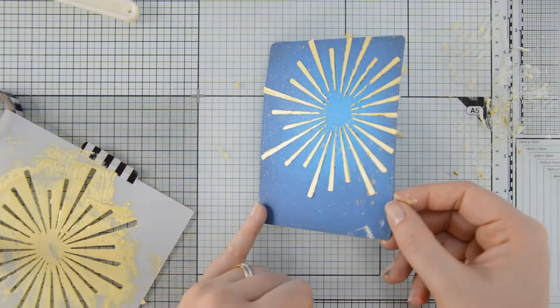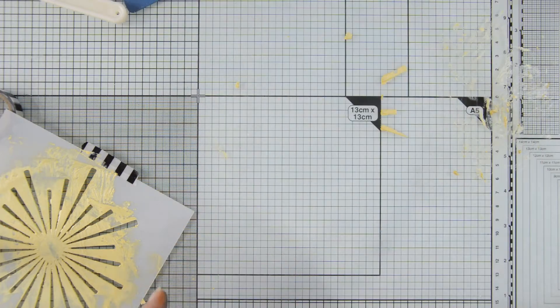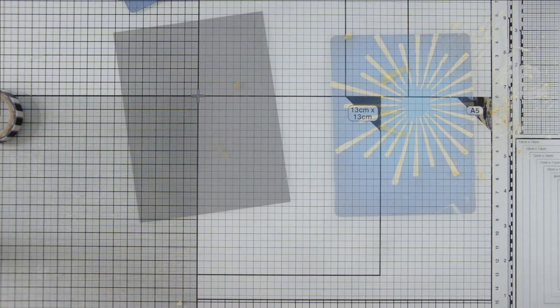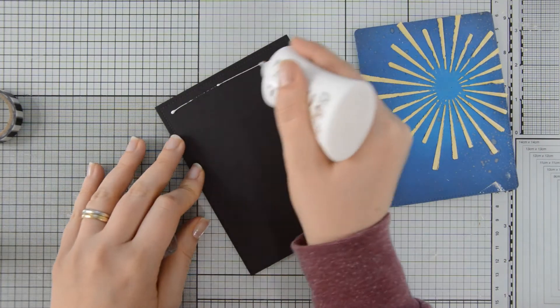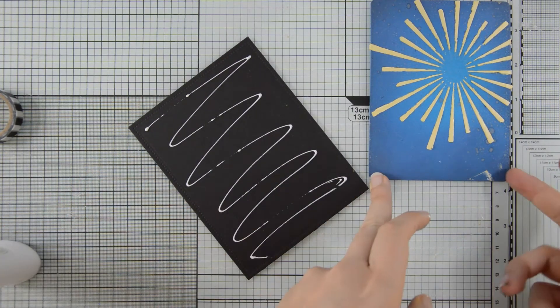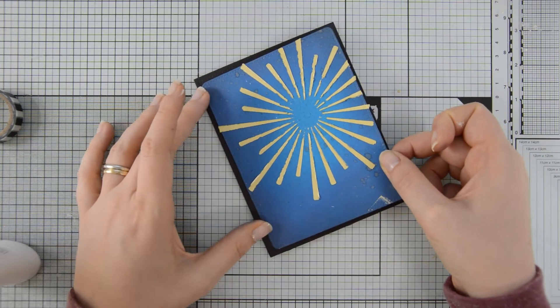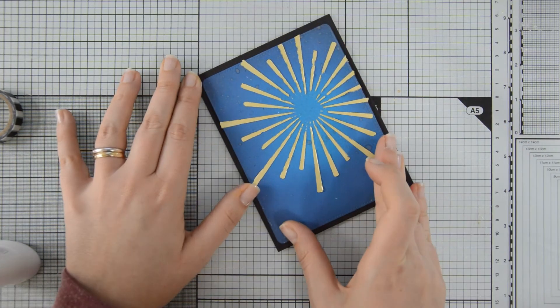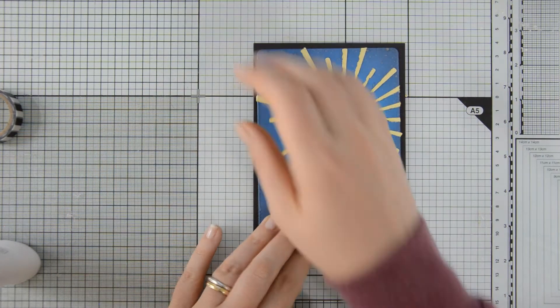When you work with mousses, make sure to wash your stencil and your spatula right away. At this point, I could go ahead and start assembling my card. So I adhered the sky panel onto my A2 black card base.